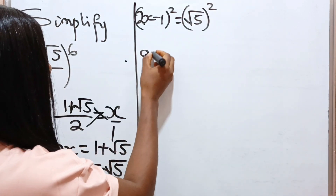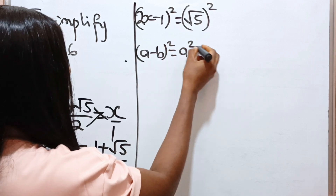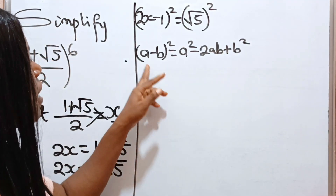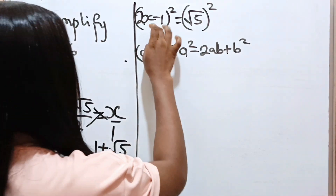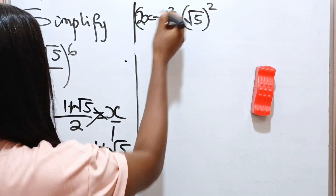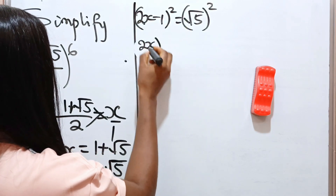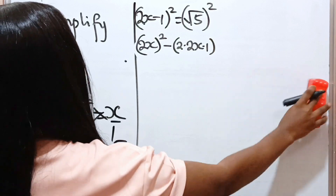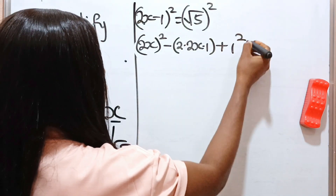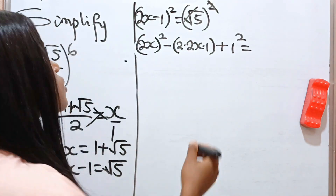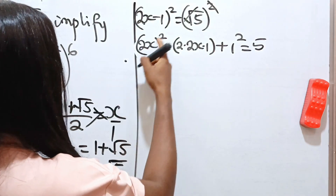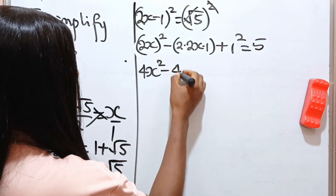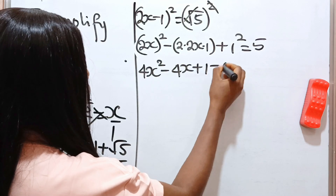Remember that (a − b)² equals a² − 2ab + b². In this case, our a is 2x and our b is 1. So expanding the brackets: a² is (2x)², minus 2ab is minus 2 times 2x times 1, plus b² is 1² — and this equals 5. So 2² is 4, giving us 4x² minus 4x plus 1 equals 5.